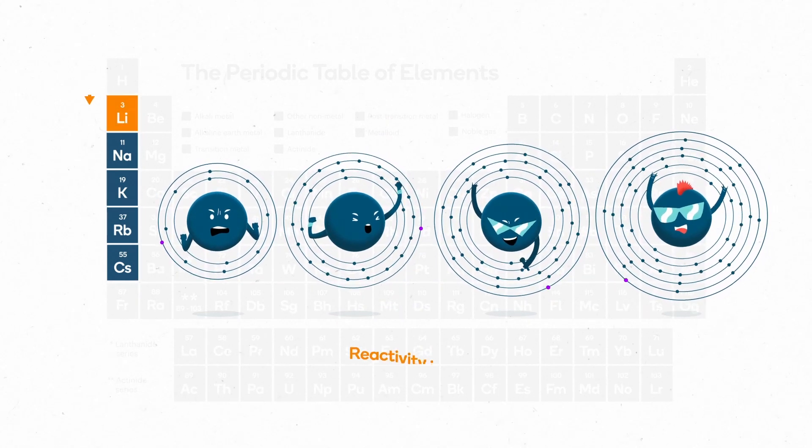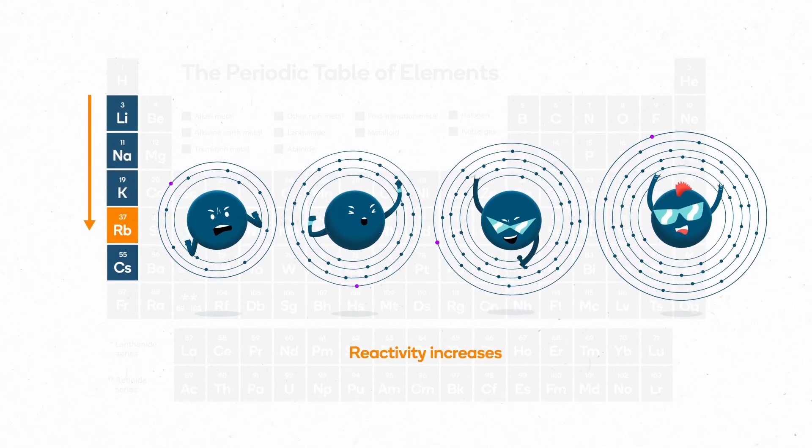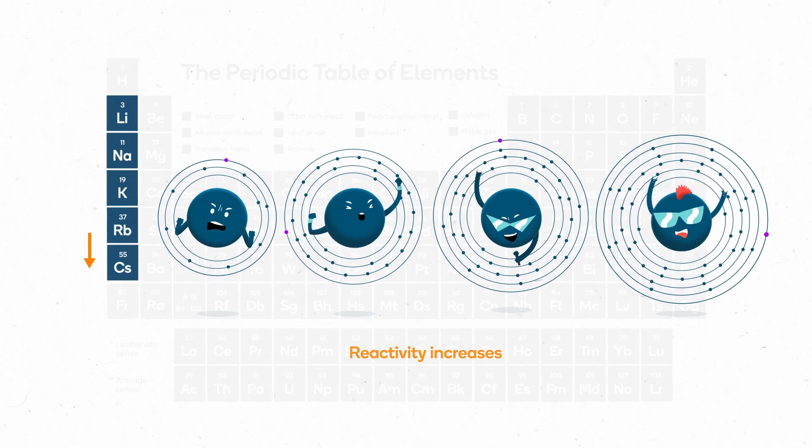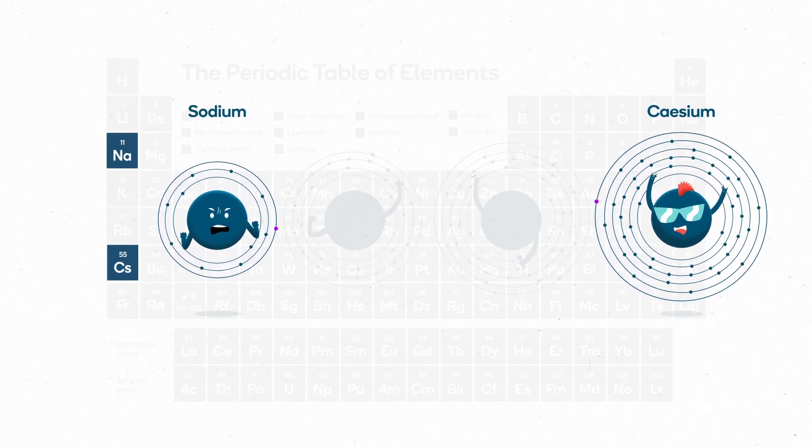But we also observe that reactivity increases as we move down group 1. For example, cesium is much more reactive than sodium. Why?